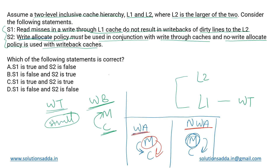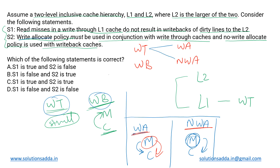The two types of cache are write-through and write-back, and the two allocation policies are write-allocate and no-write-allocate. Both policies can technically be used with either cache type, but the question is about the optimal mapping — which is what statement S2 is asking.